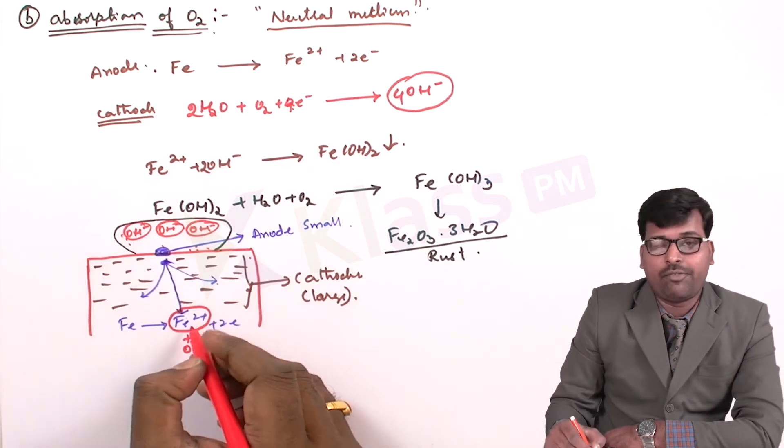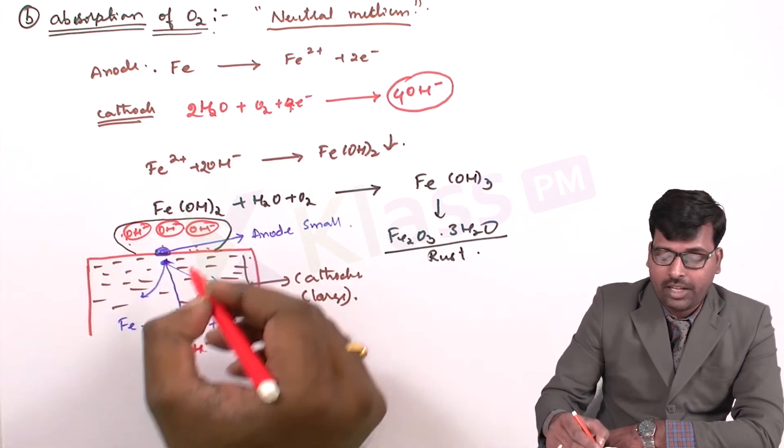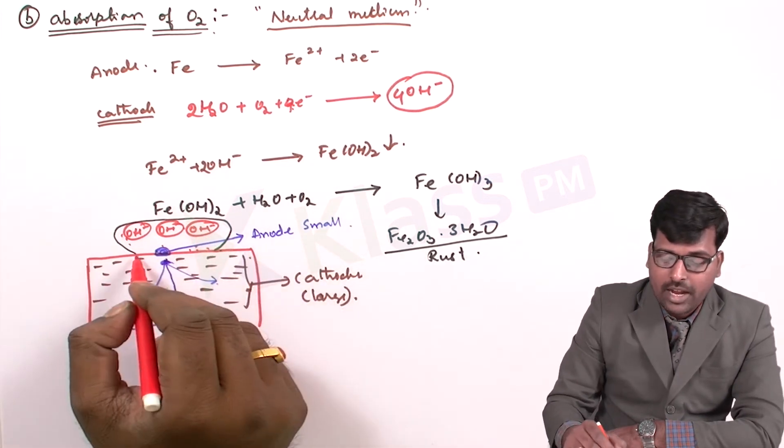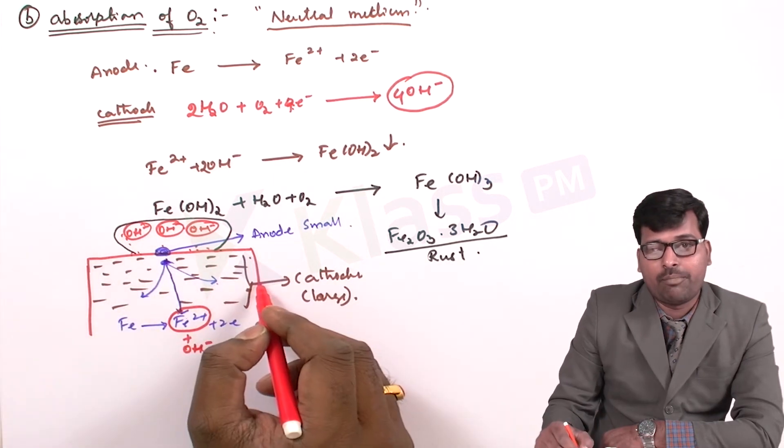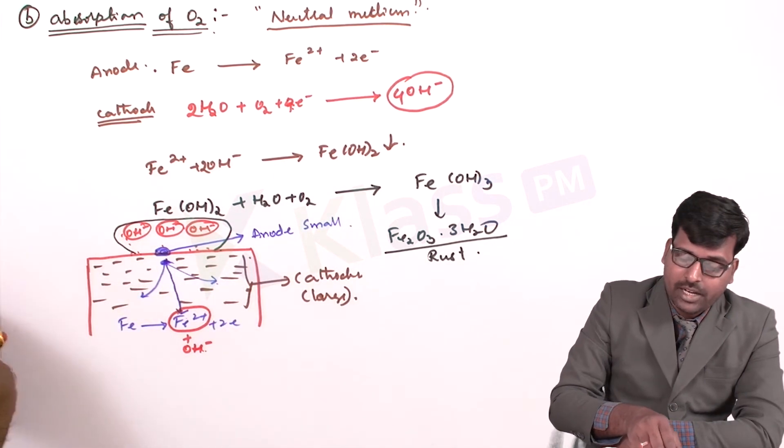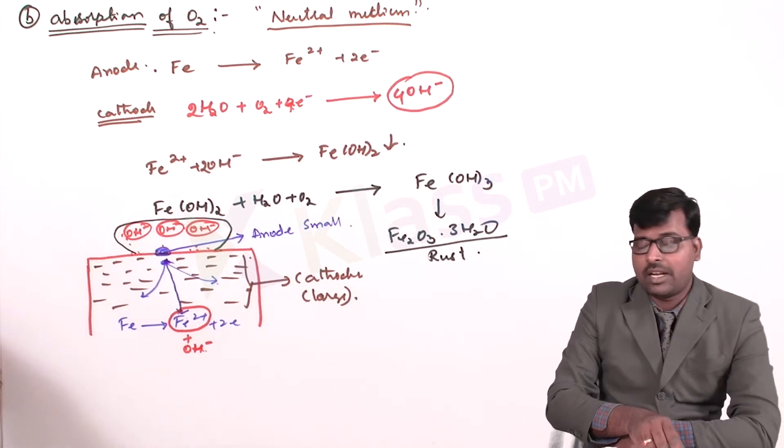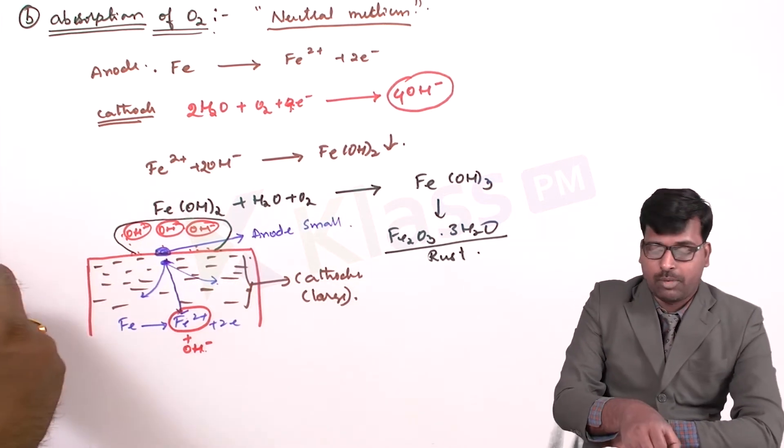And this Fe2+ ions will take this OH- ions and the corrosion product will be formed. So here we try to understand, the cathode will be large and the anode will be small.